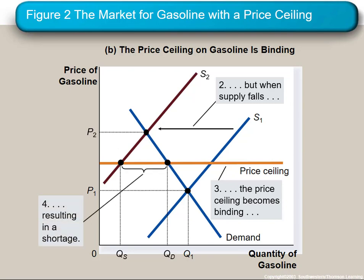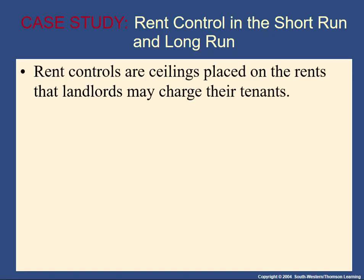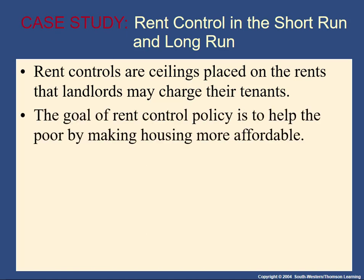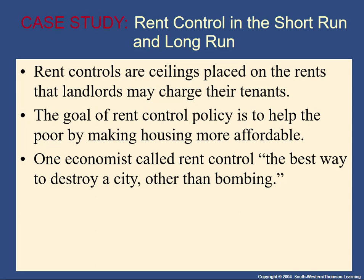That shortage meant people looking to buy gas at the ceiling price — the effective market price — couldn't find any gas to buy. That's exactly what happened in the 1970s. Rent controls are another example of price ceilings, placed on rents landlords can charge tenants — a maximum amount of rent. The goal of rent control is to help people who can't otherwise afford housing, but economists have roundly and widely criticized standard rent control policies. One economist actually said it's the best way to destroy a city other than bombing.